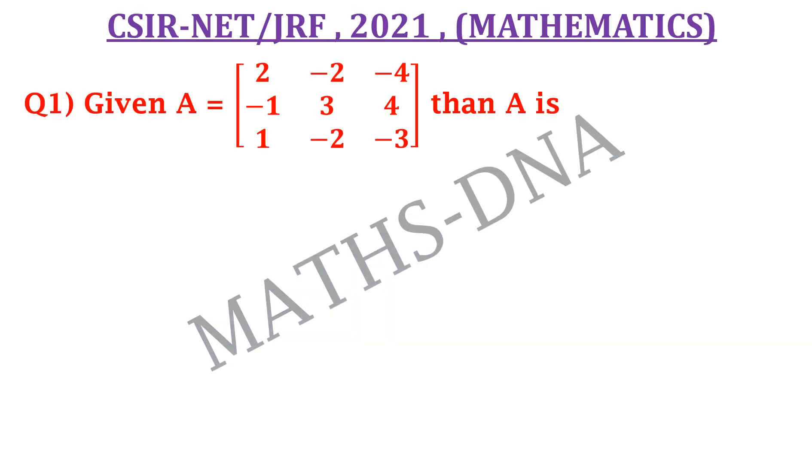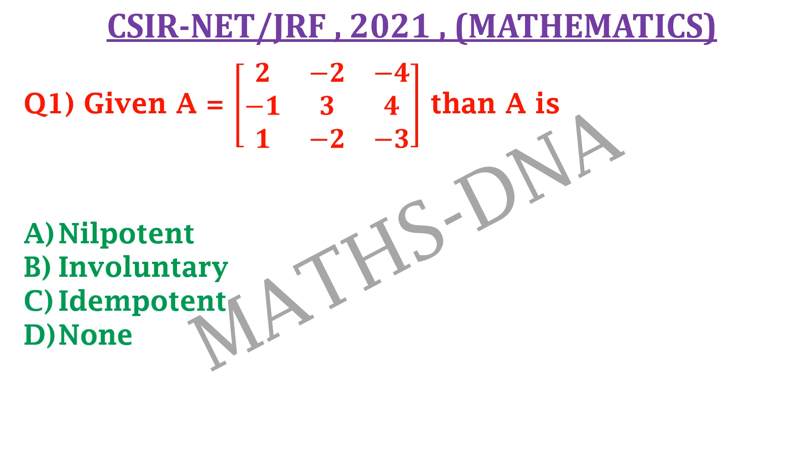Moving on to the question, the question is given A equals to a 3 cross 3 matrix whose entries are 2, minus 2, minus 4, minus 1, 3, 4 and 1, minus 2, minus 3. Then A is, the options are A, nilpotent, B, involutory, C, idempotent and D, none of them.